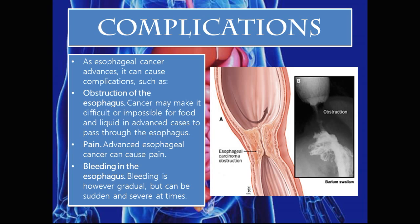Complications of esophageal cancer: As esophageal cancer advances, it can cause obstruction of the esophagus — making it difficult or impossible for food and liquid to pass through. As shown in the diagram on the right, a growing tumor within the esophagus causes obstruction where food and liquid normally pass through. Advanced esophageal cancer can also cause pain and bleeding in the esophagus, which is usually gradual but can be sudden and severe at times.